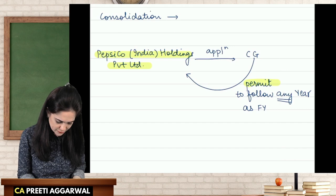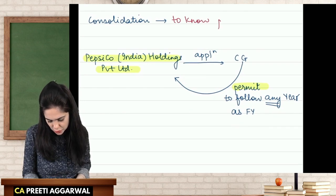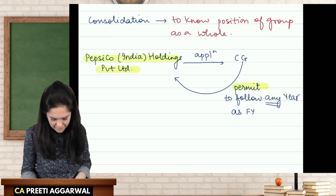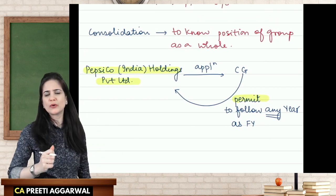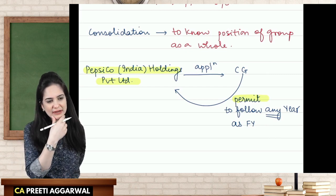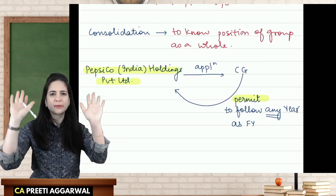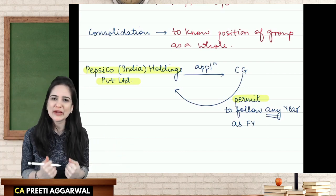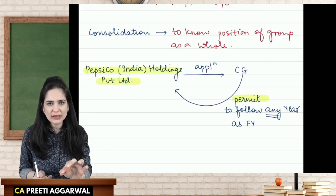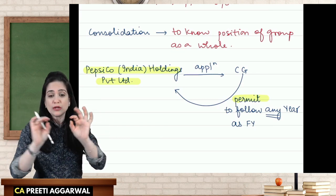This permission is granted to know the position of the group as a whole. However, this privilege is available only if you are a holding company, subsidiary, or associate of a company incorporated outside India. Not every company can claim this privilege.